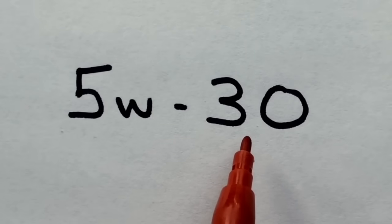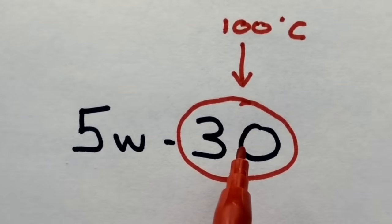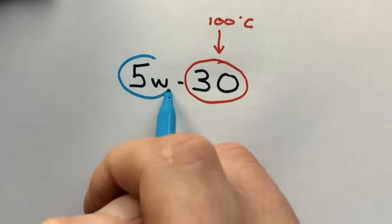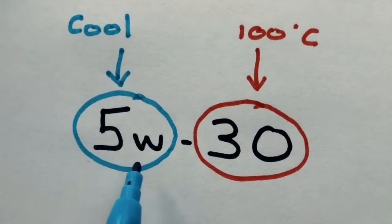It might be easy to start with the 30. This number relates to how the oil performs at 100 degrees centigrade, and this number relates to how the oil performs when the oil's cool.